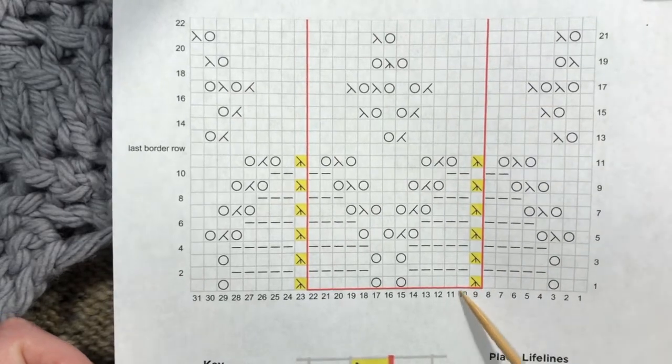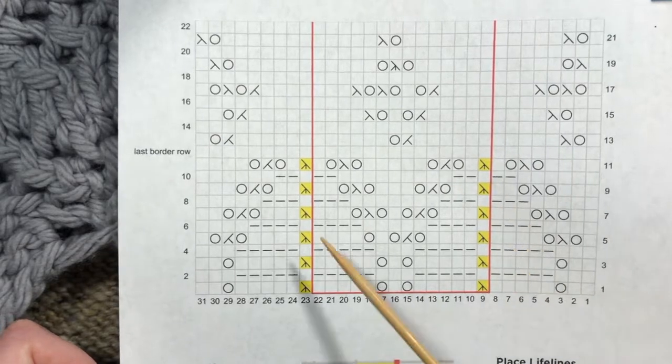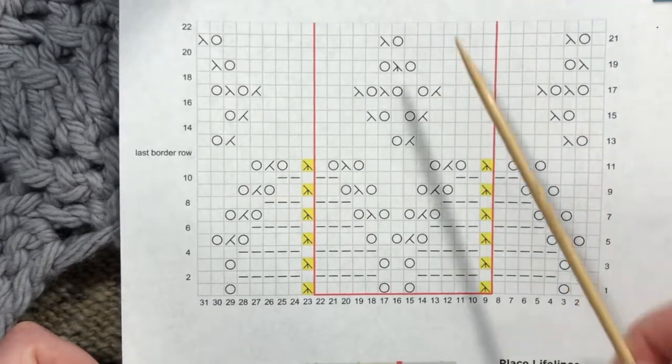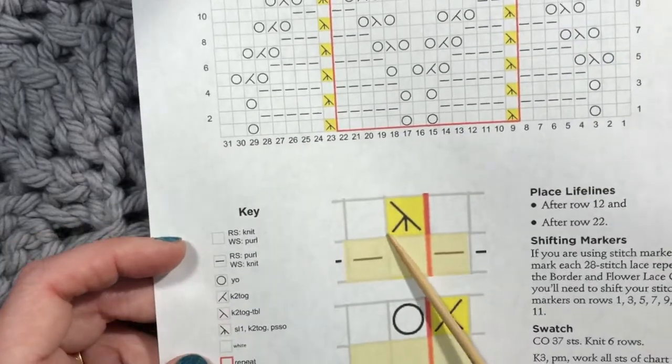So what I wanted to show you on this chart specifically is these highlighted stitches. So you're going to see this up on the top of the chart too, but we're starting down here. So I've got this zoomed in here. What does this mean?